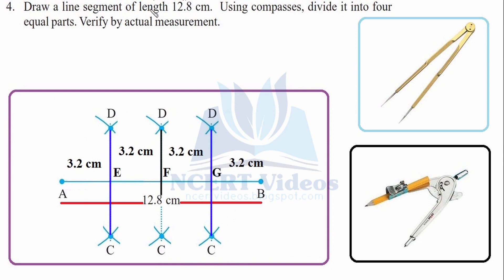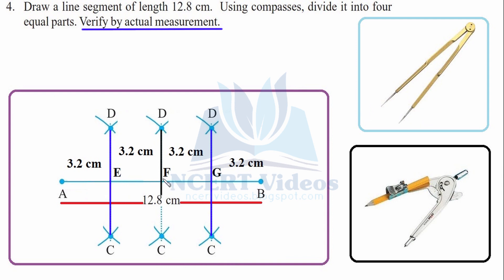Verify by actual measurement. When you compare with the divider all parts are equal, and measuring with a ruler each part will be 3.2 cm. So we have divided the 12.8 cm segment into four equal parts. That was question 4.